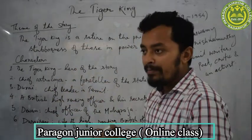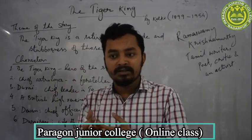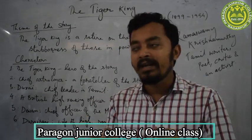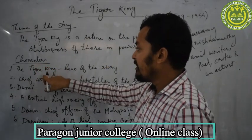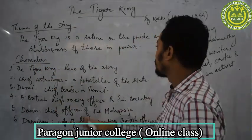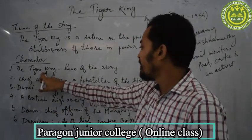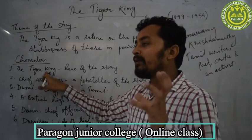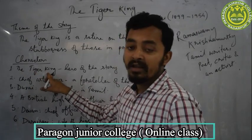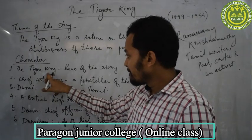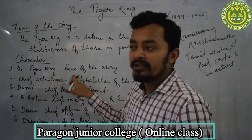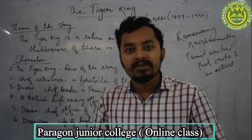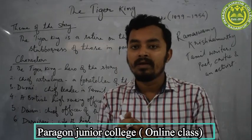Characters are very important because if you know the characters before coming to the discussion of the story, that will help you in knowing and understanding the story better. The first character is the Tiger King, the king himself. He is the hero of the story. He is also called the Maharaja of Pratibandha Puram.